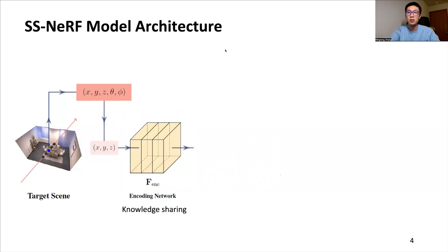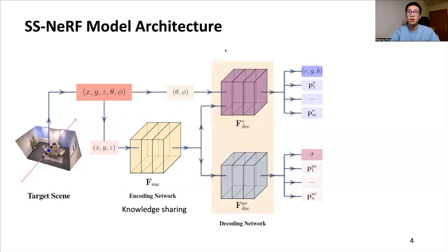Since some properties are not sensitive to the view directions, we adopt two types of decoding networks. The view-dependent branch takes the additional 2D view input together with the encoded 3D locations to synthesize scene properties, while the view-independent branch predicts the scene properties with encoded 3D locations only.